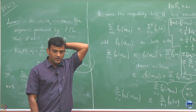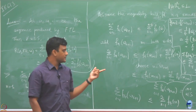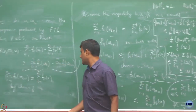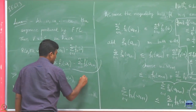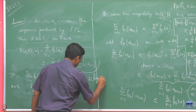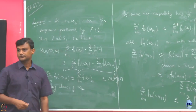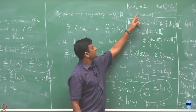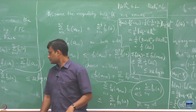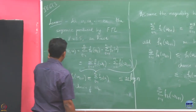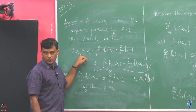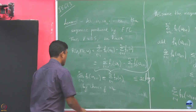What I have now is a bound that is independent of whatever U I am interested in — this is true for any U. So finally what I have shown is that for the FTL algorithm, the regret is upper bounded by 2L log n. L is some constant which I am assuming is the bound on the norm of the W_T's. So the regret of my follow the leader algorithm is upper bounded by 2L log n.